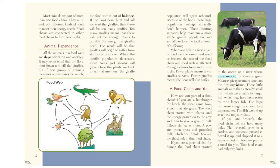Microscopic consumers dined on those tiny organisms. These little animals were then eaten by small fish, which were eaten by larger fish, which may have been eaten by an even larger fish. The large fish were caught, sold to a supermarket, and wound up as a meal on your plate. If you ate broccoli, the food chain did not have many links — the broccoli grew in a garden, was picked, boxed up, shipped to a supermarket, and became part of a meal for you. That food chain only had two links.